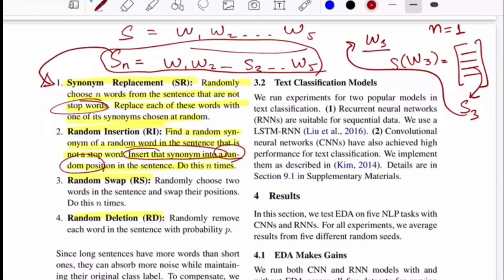In the same case, if you have the same sentence S which is w1 to w5, you choose any random word, let's say w2 this time, you find the synonym which is s2, you insert s2 at any position - it could be in the beginning, in the last, or somewhere in between - and that is your newly augmented sentence based on this rule.